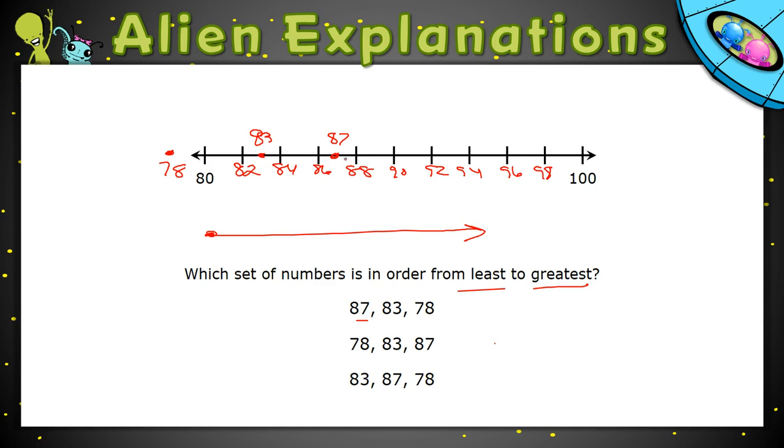83 we already marked, 87 we already marked, so these are pretty easy to compare now. We just want to order from the smallest value to the largest value.